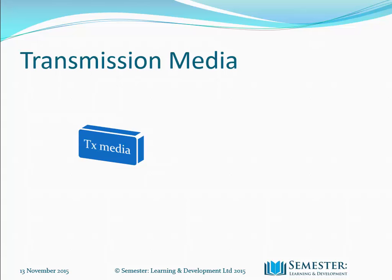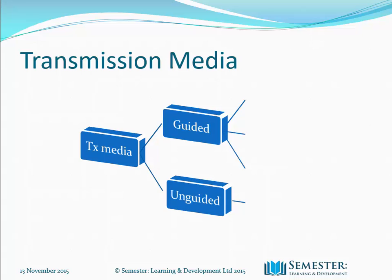Transmission media can be split into two categories: guided and unguided. Media refers to the method used to guide an electromagnetic waveform to its destination. Most guided media is usually over short distances and generally made from copper. Unguided media systems use radio waves where the waves are not restricted to a pathway.